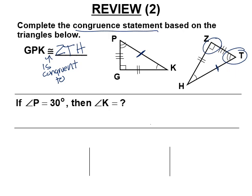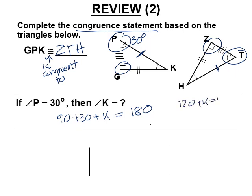If angle P is 30 degrees, what's the measure of K? G is 90, P is 30, and all three angles of a triangle add up to 180. So 120 plus K equals 180, and K equals 60 degrees.